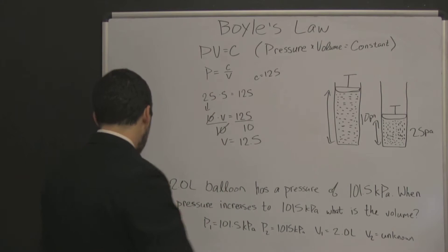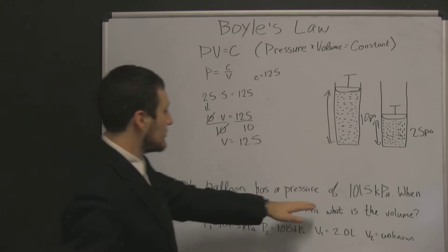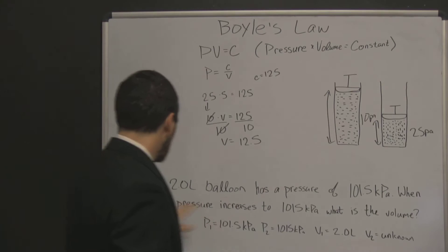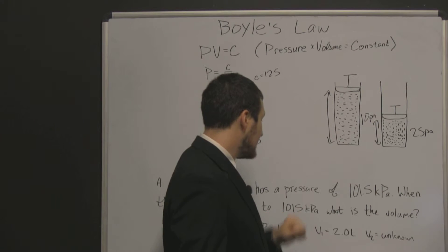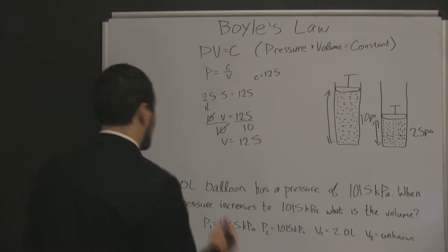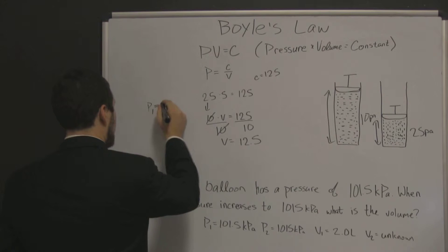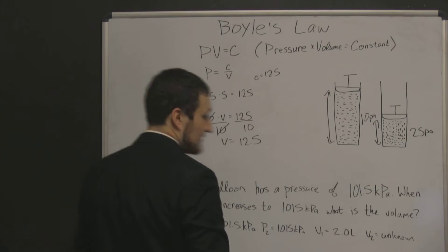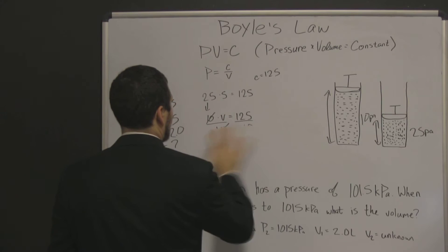Now to use that in an example, we have an example down here. A 2 liter balloon has a pressure of 101.5 kilopascals. When the pressure increases to 1015 kilopascals, what is the volume? So we have P1, our pressure 1 is equal to 101.5. Our P2 is equal to 1015. Our volume 1 is equal to 2.0, and our volume 2 is what we don't know. That's what we're shooting for to figure out our second volume.